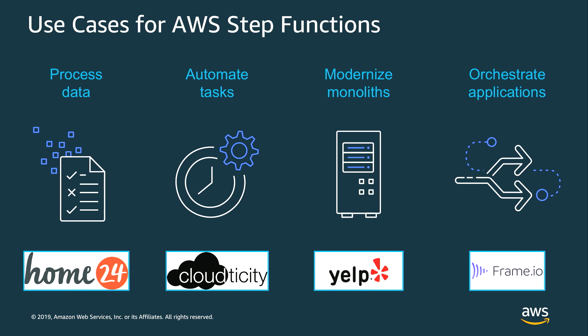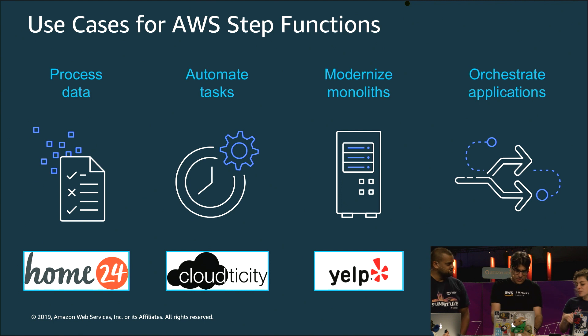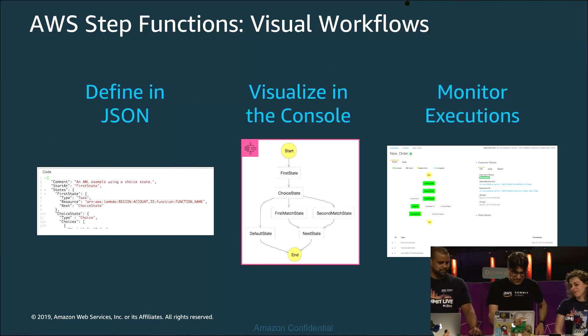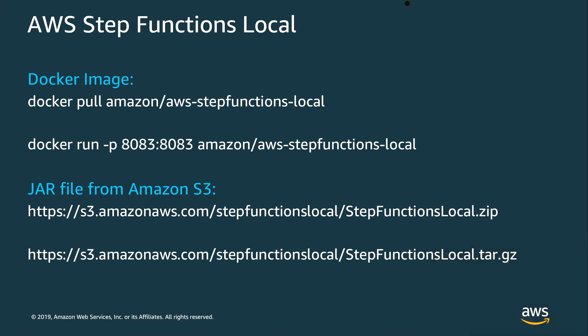Step Functions has already come a long way in a short lifespan. What about new features recently released? We launched earlier this year a local runner — so instead of needing Step Functions in the cloud to speed up development, you have a local runner you can run on your desktop. It's fully API compatible, available as a Docker image or as a JAR file you can download from S3. That means you can build and deploy your state machines on your laptop while you're on an airplane and then bring them to AWS when you land. Another useful feature is tag-based policies for IAM.